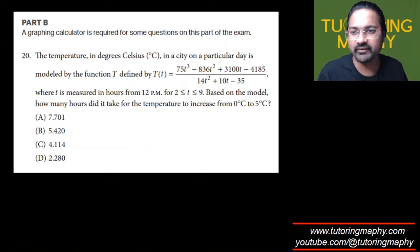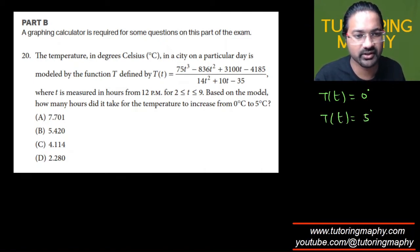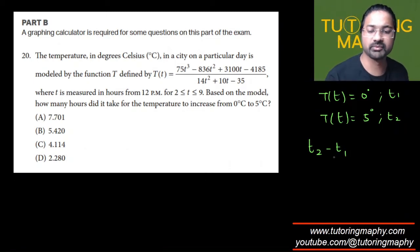Okay, so I think what we need to find is when is the temperature 0 and when is the temperature 5 degrees Celsius. Once we have a t1 here, once we have a t2 here, they are looking for the value of t2 minus t1, which we can just answer. So give me one second, let me pull this graph.